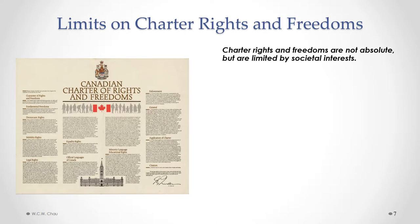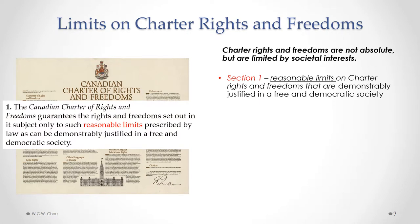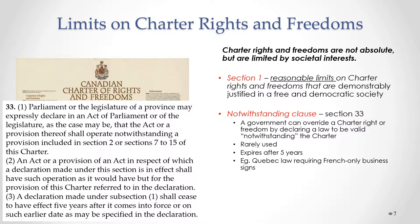Charter rights and freedoms are not absolute but are limited by societal interests. The major legal mechanism used to limit Charter rights and freedoms is Section 1 of the Charter. Section 1 essentially says that a government can place reasonable limits on Charter rights and freedoms that are demonstrably justified in a free and democratic society. We will look at cases where we apply Section 1 to determine whether or not a government has reasonably limited a Charter right or freedom.